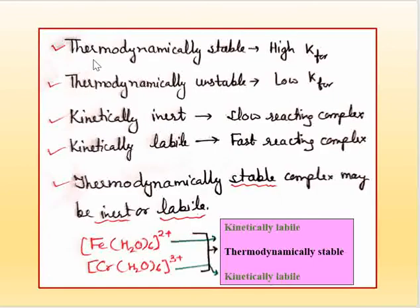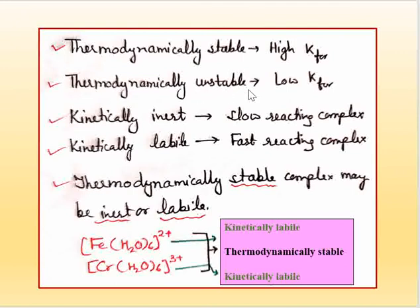Let's revise: if we think about thermodynamically stable complexes, the formation constant is high — we call it the stability constant. If we talk about a thermodynamically unstable complex, then the formation constant is low and the dissociation constant is high. Dissociation constant and formation constant are reciprocal to each other.